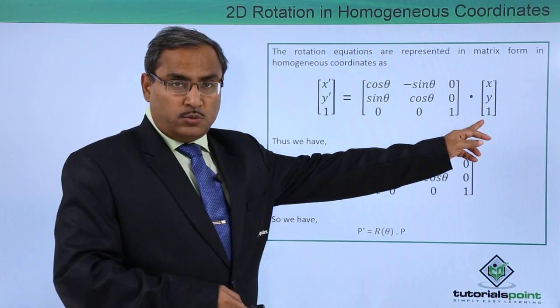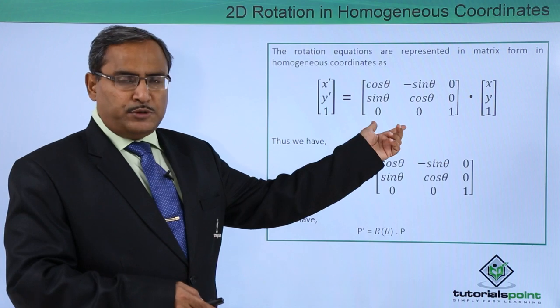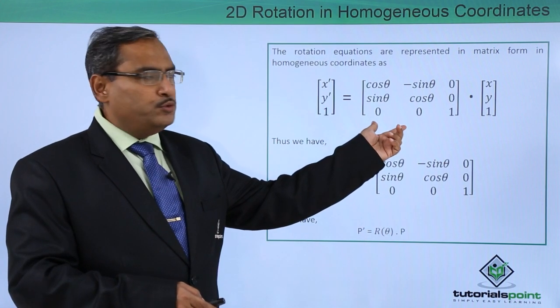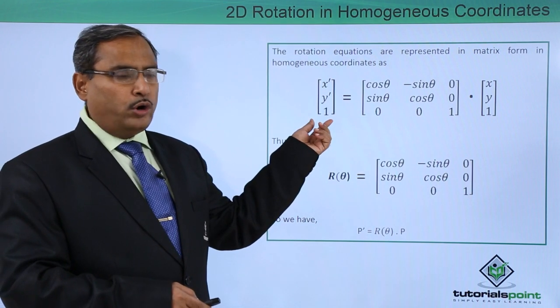This is the point which has to be rotated. This is the respective transformation matrix for rotation in homogeneous coordinates, and this is the respective resultant point coordinate.